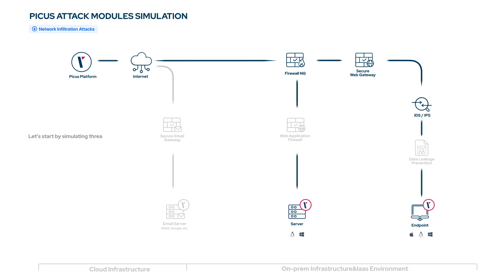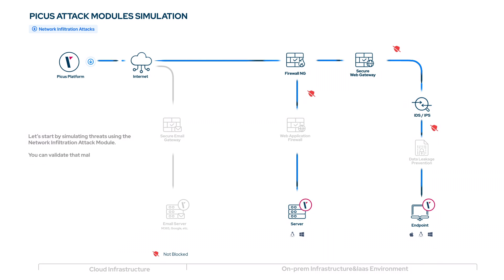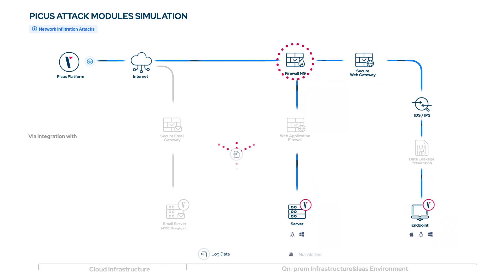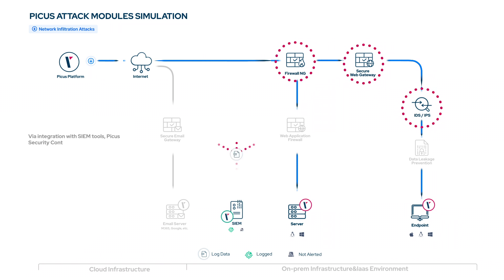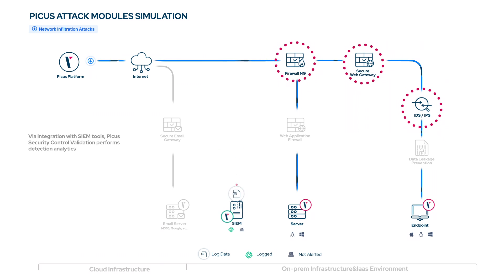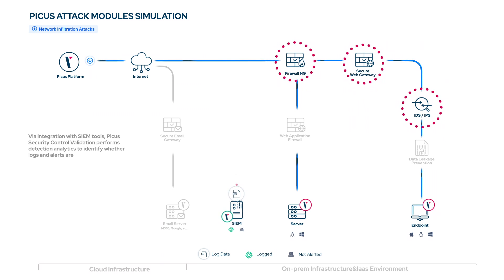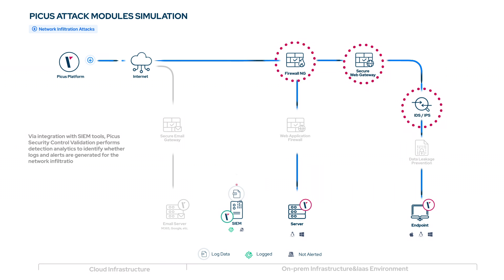Let's start by simulating threats using the Network Infiltration attack module. You can validate that malware and ransomware downloaded via client-side attacks are prevented and detected by network and endpoint security controls. Via integration with SIEM tools, PICAS security control validation performs detection analytics to identify whether logs and alerts are generated for the network infiltration attacks that are simulated.